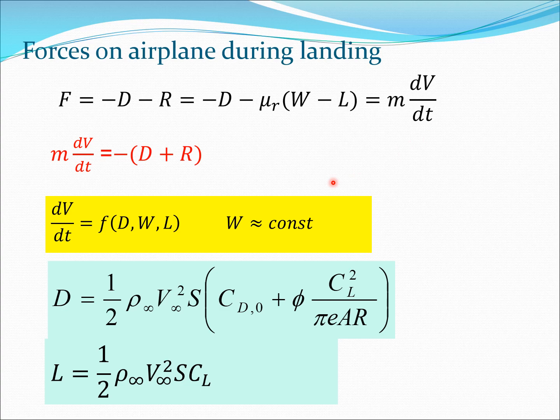Rewriting the equation of motion: m dv/dt equals minus (D plus R). Drag and lift vary with velocity squared, but the weight of the aircraft is essentially constant since very little fuel is burned during landing. Lift is given by L = ½ρv²SC_L, where ρ is air density, v is velocity, S is wing area, and C_L is the lift coefficient.